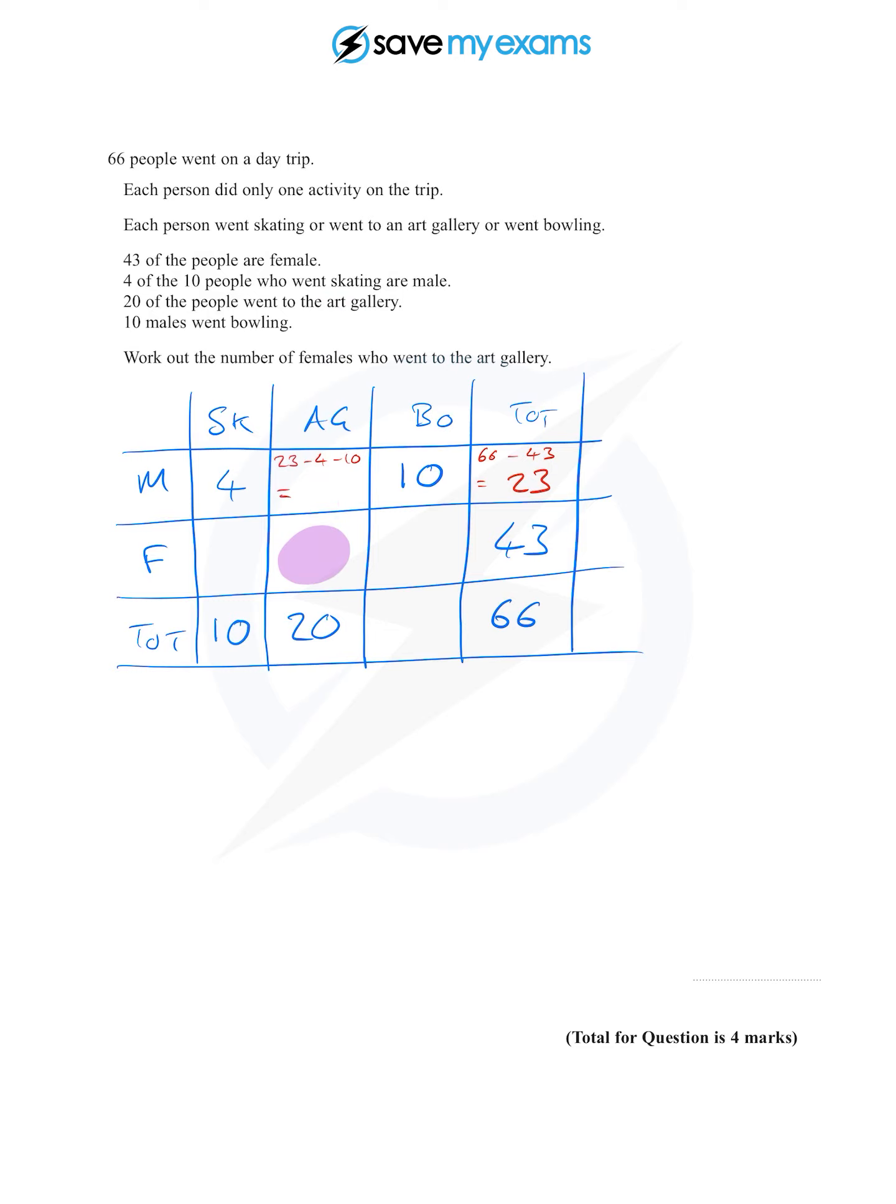And now you can see that we can go straight to our answer because we only have one thing missing, which is the blob we want. This is 20 minus the 9, which is 11. So we can say 11 females went to the art gallery.